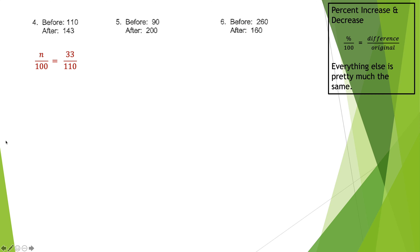So n over 100 equals 33 over 110. Cross multiplying gives 110n equals 3300. Dividing by 110 gives n equals 30 — a 30% increase. The key formula is: the part is the difference, and the whole is the original amount. Now try problem five: going from 90 to 200.